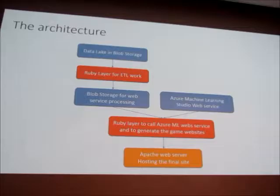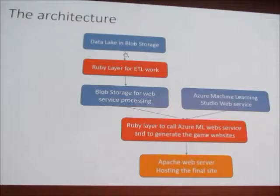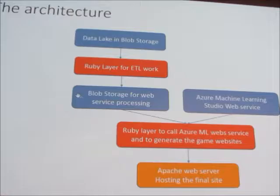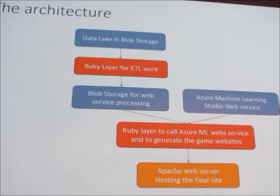The architecture will look like this: first they'll store all the different books. Next, they'll extract all the data in a more workable format through the ETL process, and store everything in blob storage. Then there's the experiment set up in Azure Machine Learning Studio making word clouds and histograms. These are pulled together in a layer, configured to an HTML page, which is finally shown in Apache.